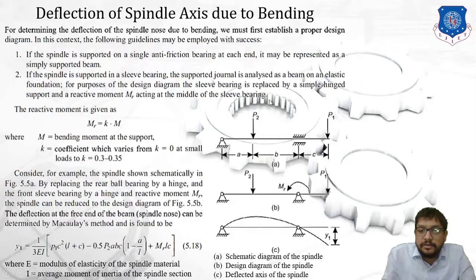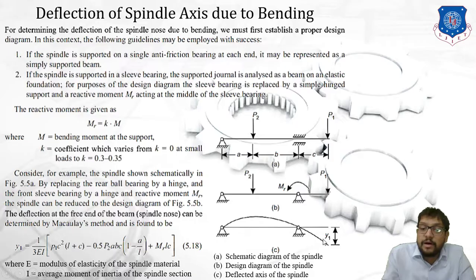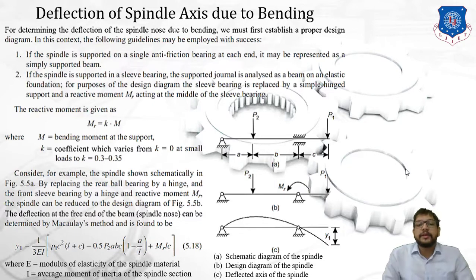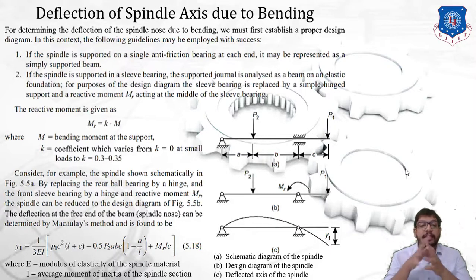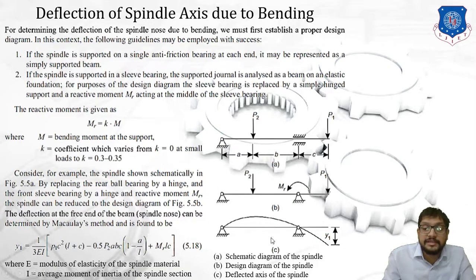As you can see in the figures: the first diagram shows the spindle schematically as seen in the previous slide; diagram B is the design diagram of the spindle; and the third diagram represents the deflected axis of the spindle with displacement Y1. For example, the spindle shown schematically in figure A is reduced to a design diagram (figure 5.5B) by replacing the rear ball bearing with a hinge and the front sleeve bearing with a hinge and reactive moment MR.